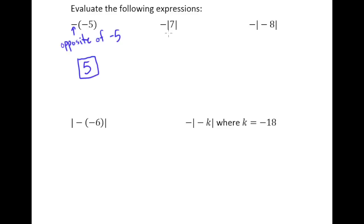So what is the absolute value of 7? Well remember, the absolute value is the distance from 0. So the absolute value of 7 is 7.